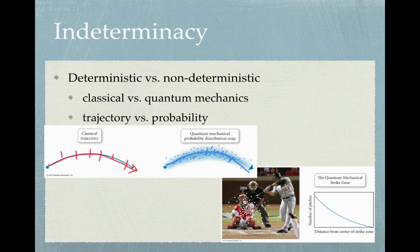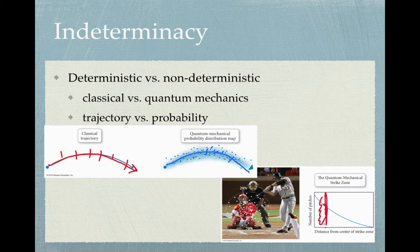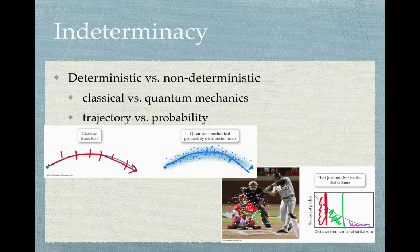For example, if a pitcher's baseball followed the rules of quantum mechanics, assuming every pitch is done identically, most pitches would land roughly where expected — in a central cluster. But some would land farther out, and a small number even farther still. This corresponds to the probability distribution: the greatest probability is along the expected trajectory, but there is a nonzero probability of the ball landing almost anywhere.